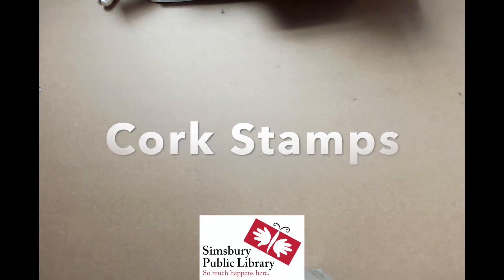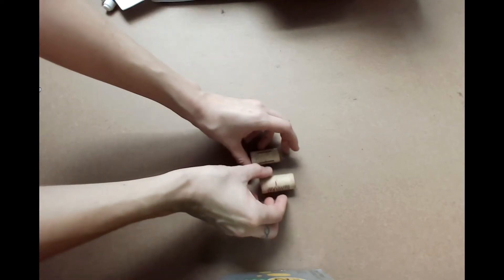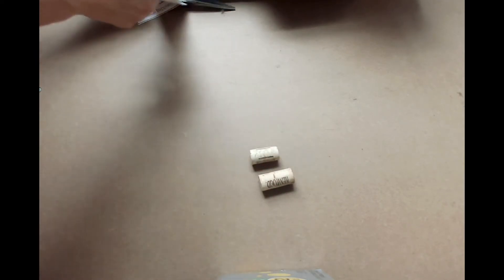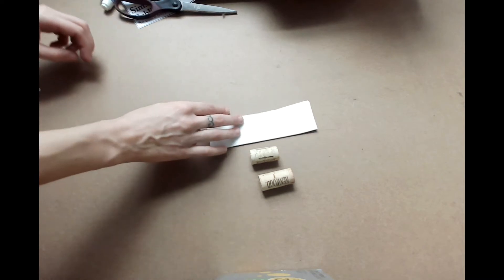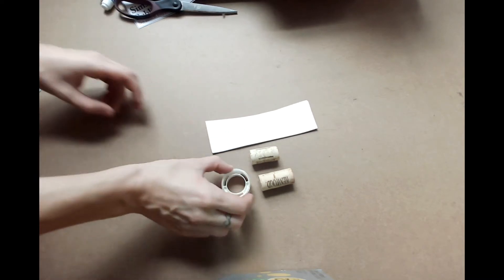Today we'll be making cork stamps. Your kit should have included two corks, a piece of foam, and some glue dots.